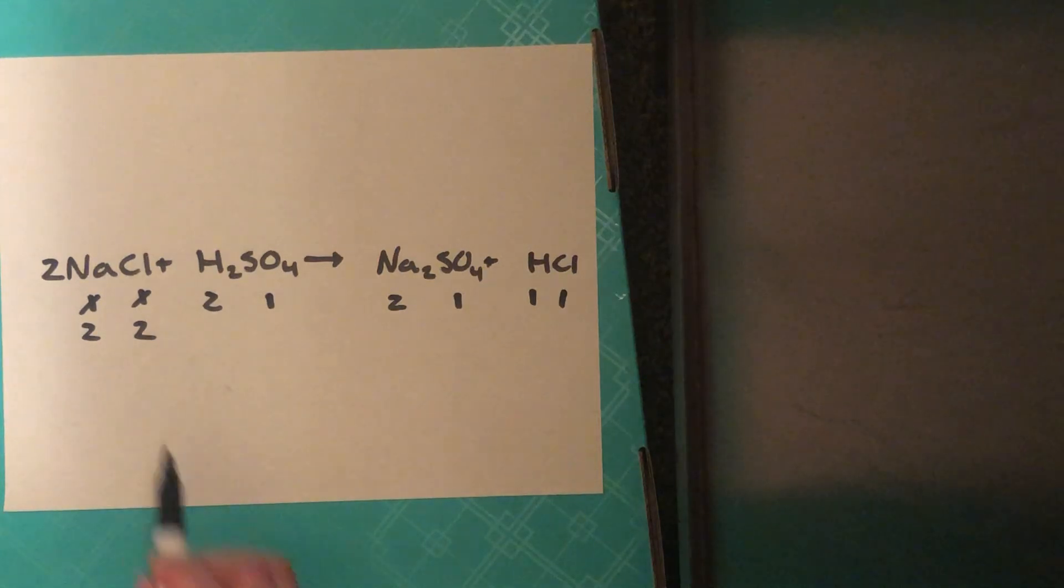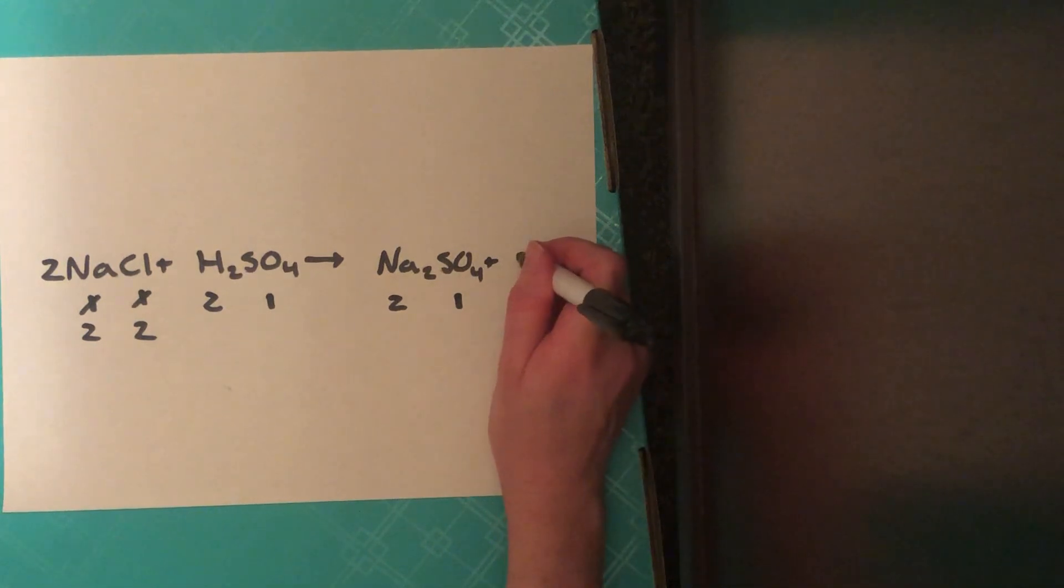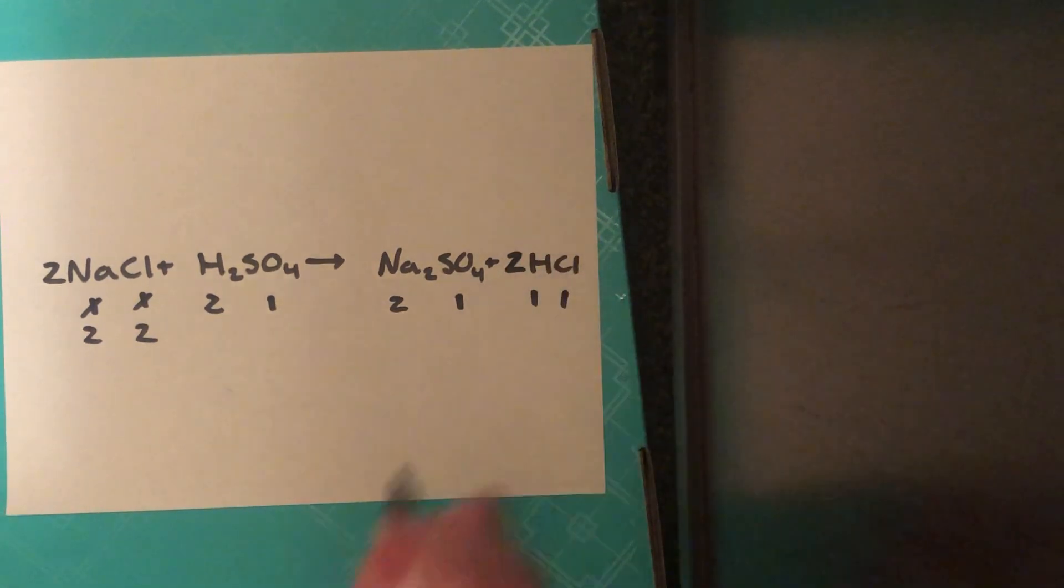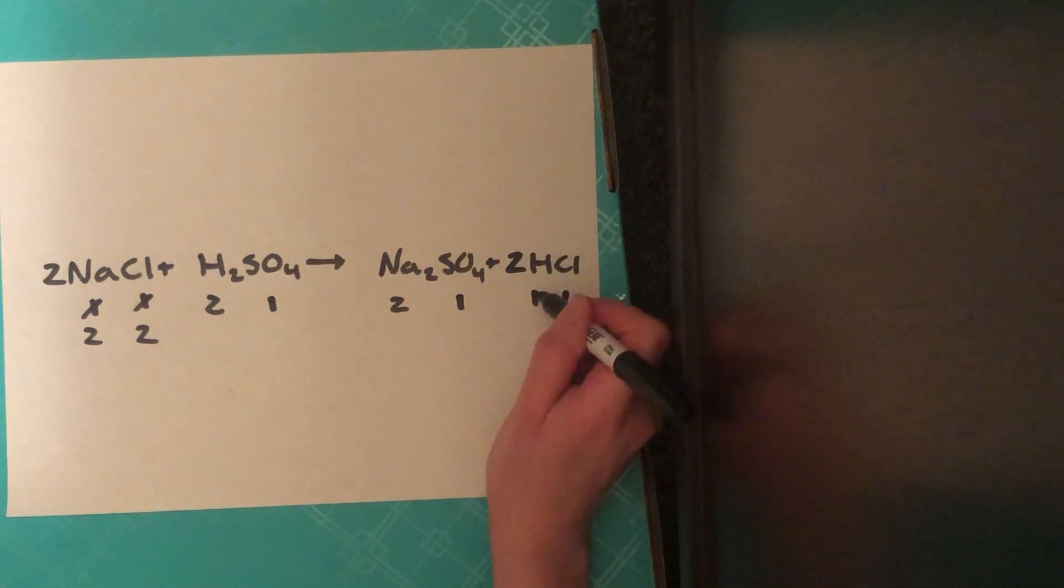We'll have our chlorides match up by putting a 2 in front of the HCl. That's going to distribute to both entities.